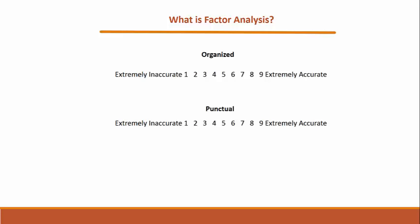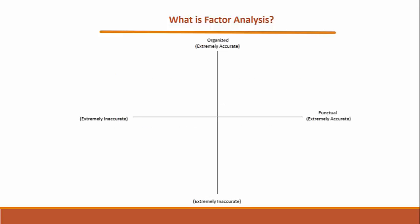Goldberg asked nearly 200 students to rate how accurately they thought these terms applied to their personalities. They used nine-point scales, anchored by extremely inaccurate at one, up to nine extremely accurate. Treating the ratings as variables, we can create a Cartesian coordinate space, as shown here on the screen. Here's the first person in the study. She rated herself high on organization and also high on the punctuality scale.